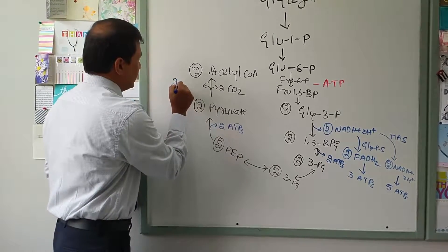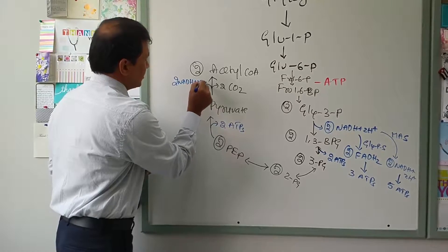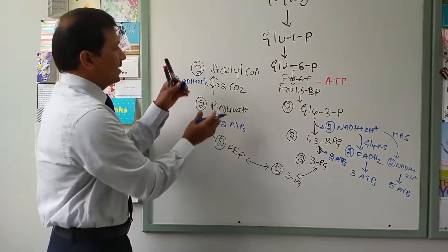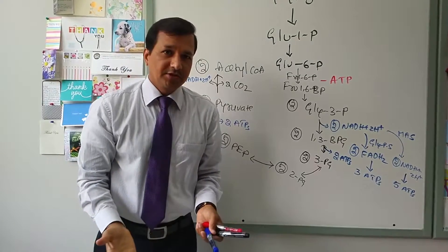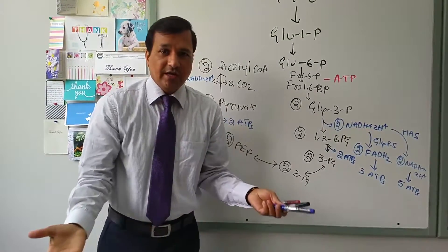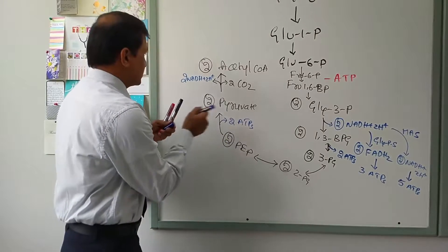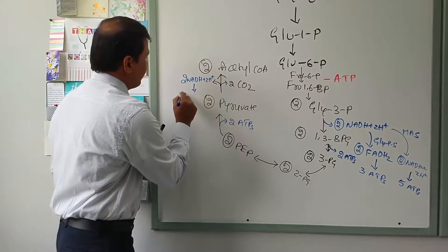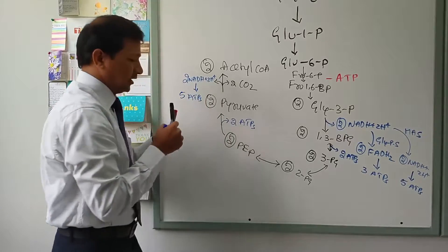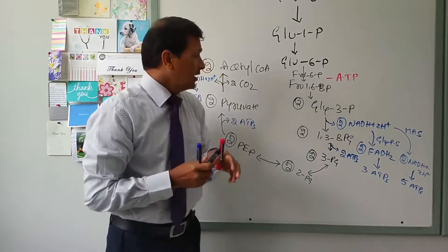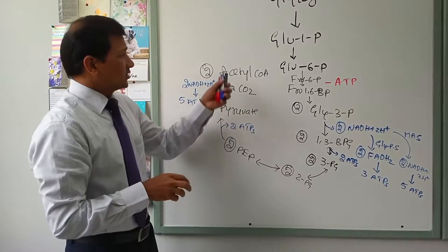Also during the pyruvate-to-acetyl-CoA conversion, 2 NADH + 2H⁺ are produced. Since this reaction occurs in the mitochondrial matrix itself, no shuttle mechanism is needed. These 2 NADH + H⁺ are worth 5 ATPs (each NADH = 2.5 ATPs).